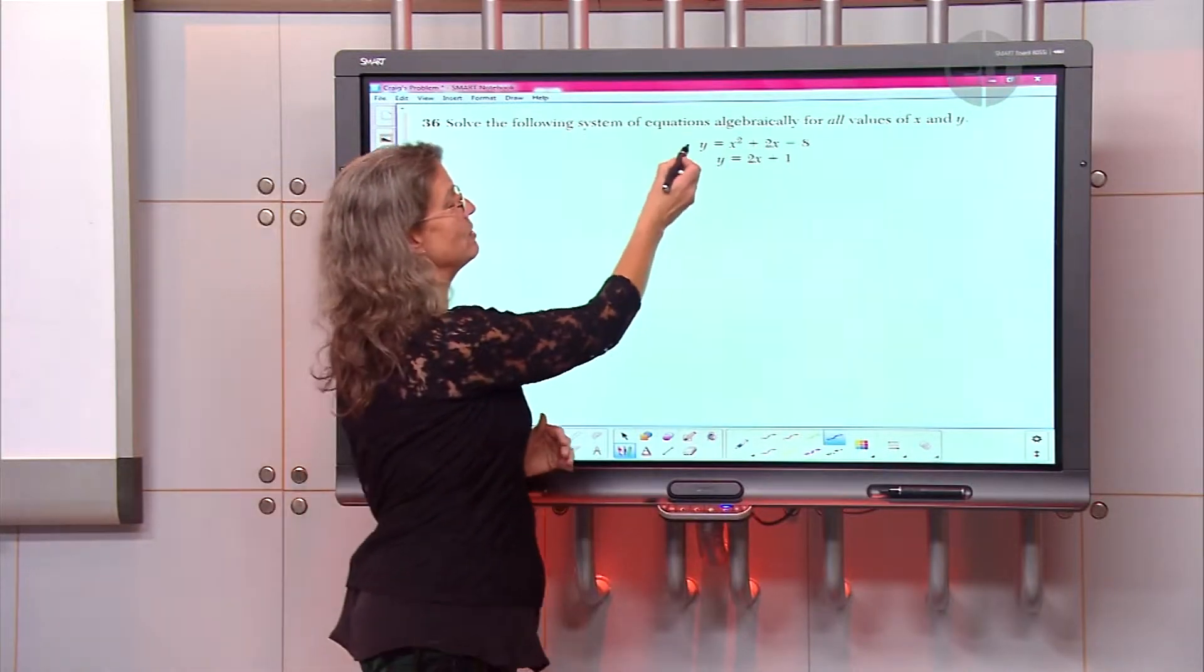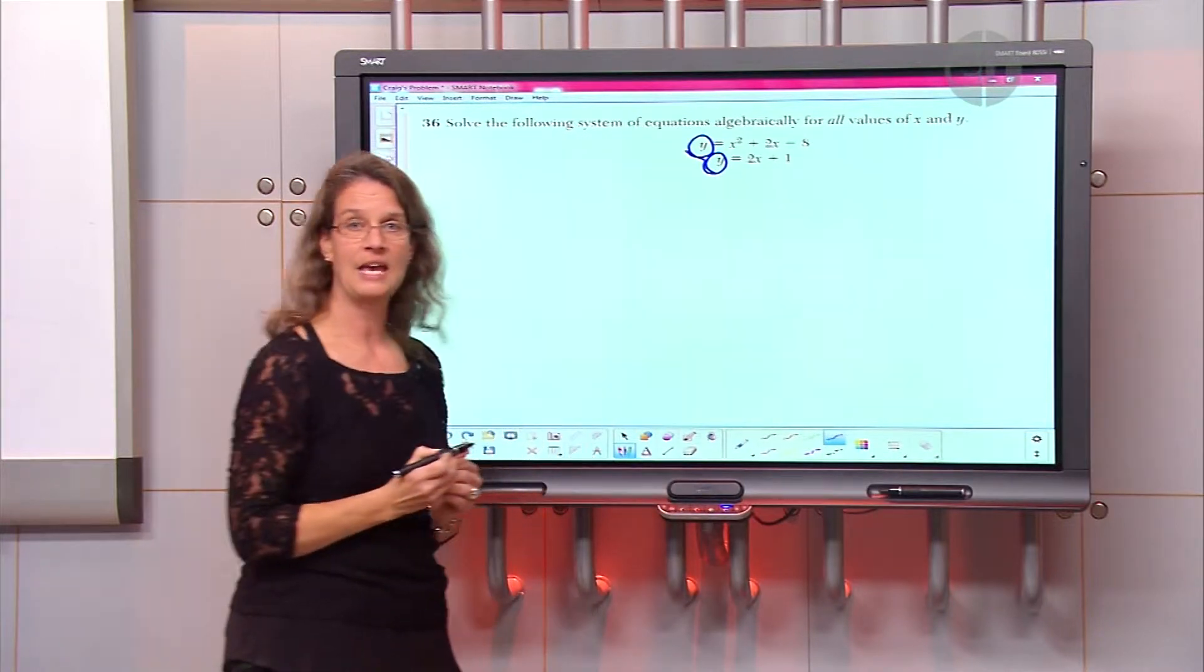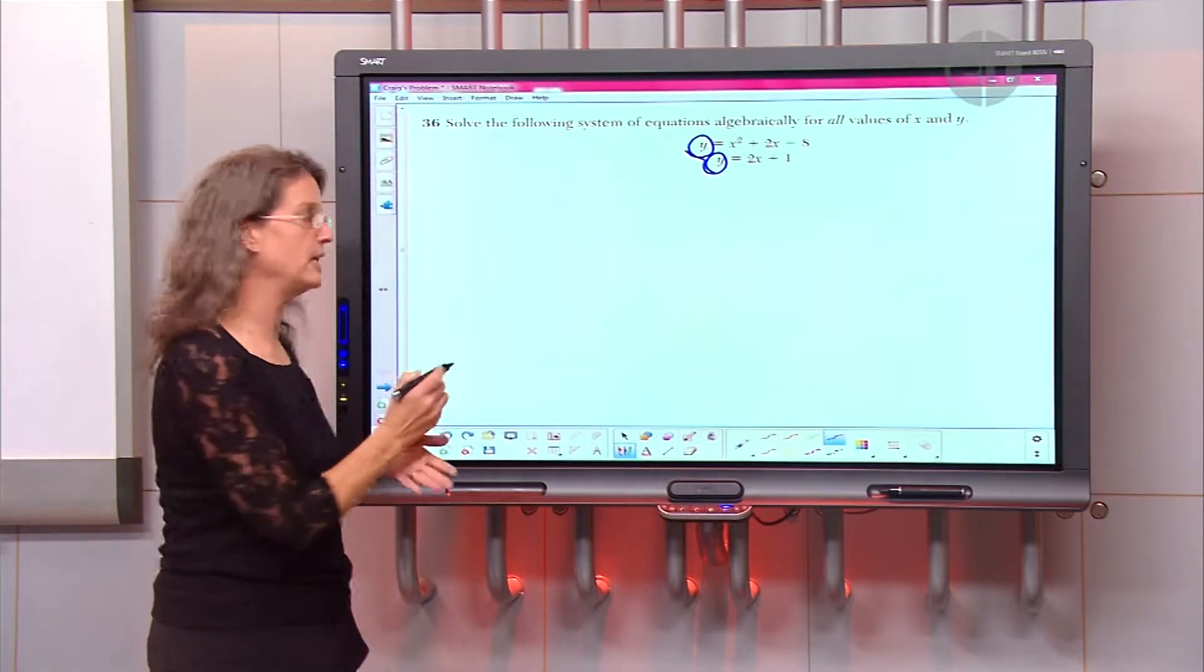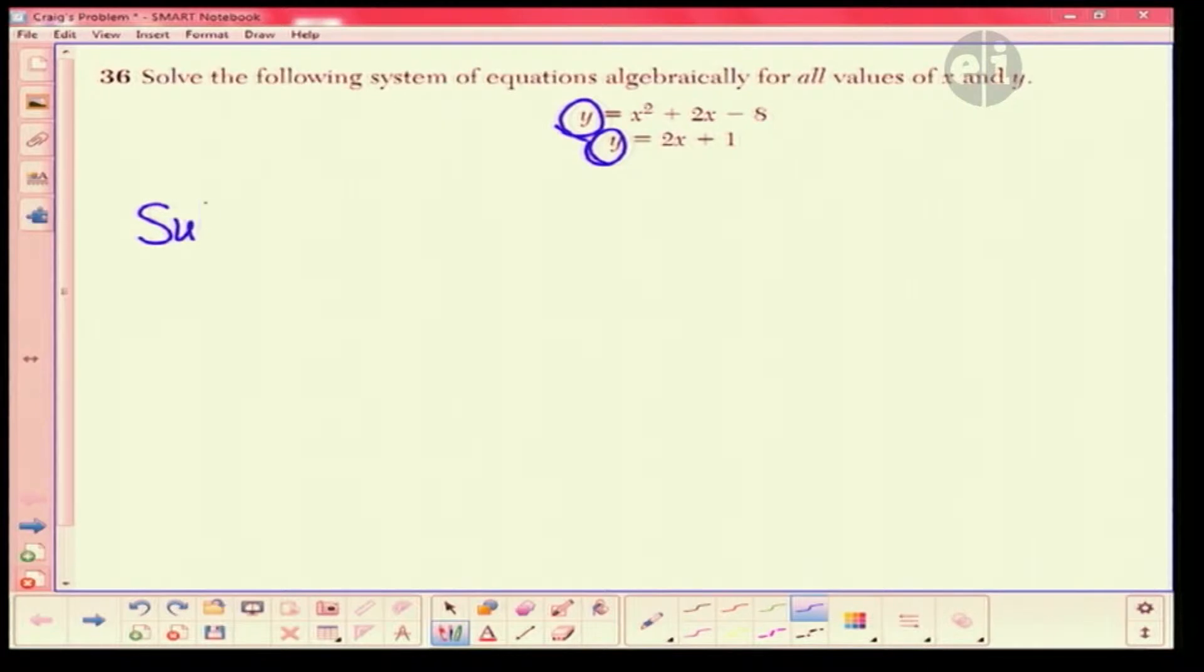I tell my students, whenever these are the exact same, to just substitute in. So it's the first thing you need to know, is to substitute. So we're going to do that, and I'm going to say 2x plus 1 is equal to x squared plus 2x minus 8.